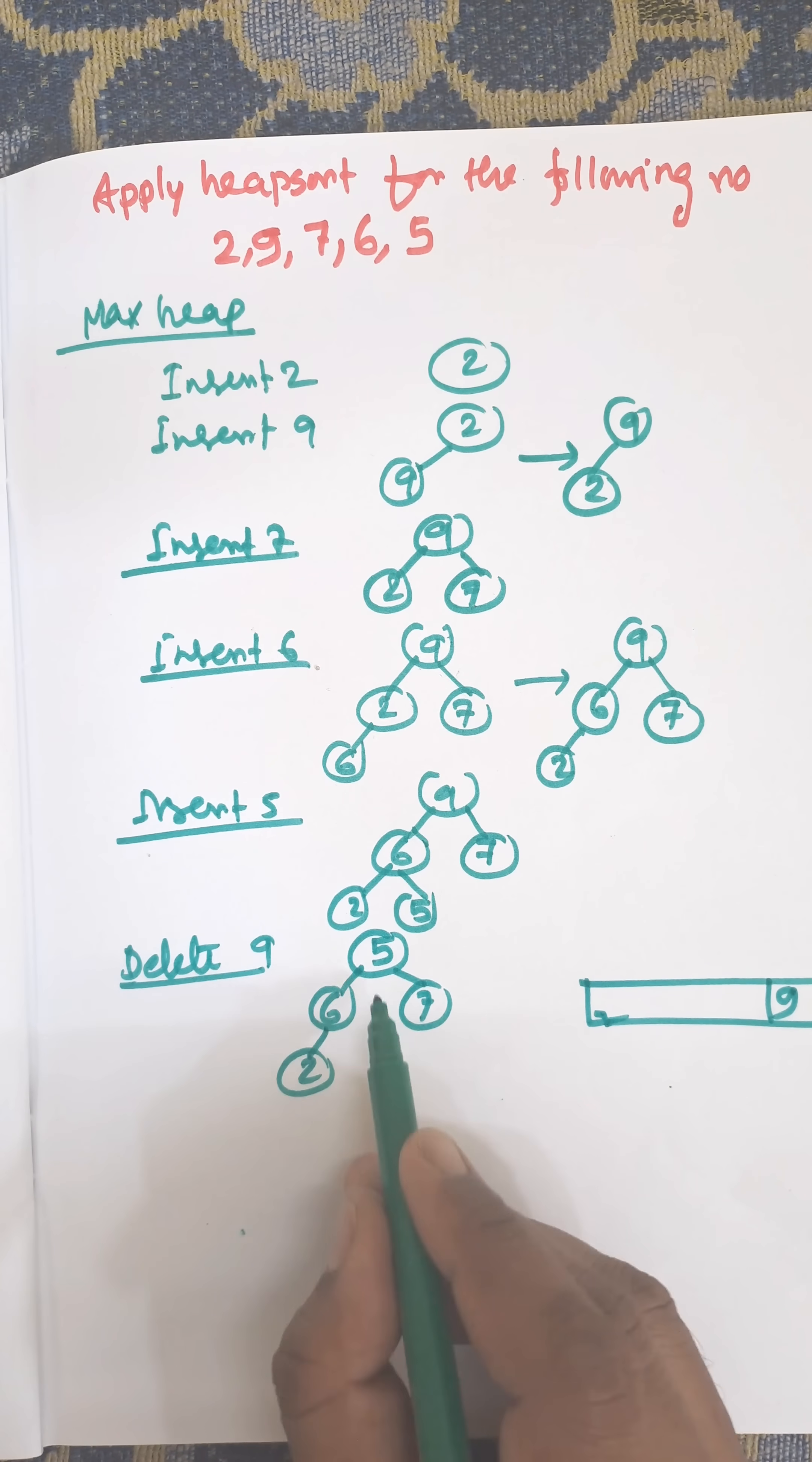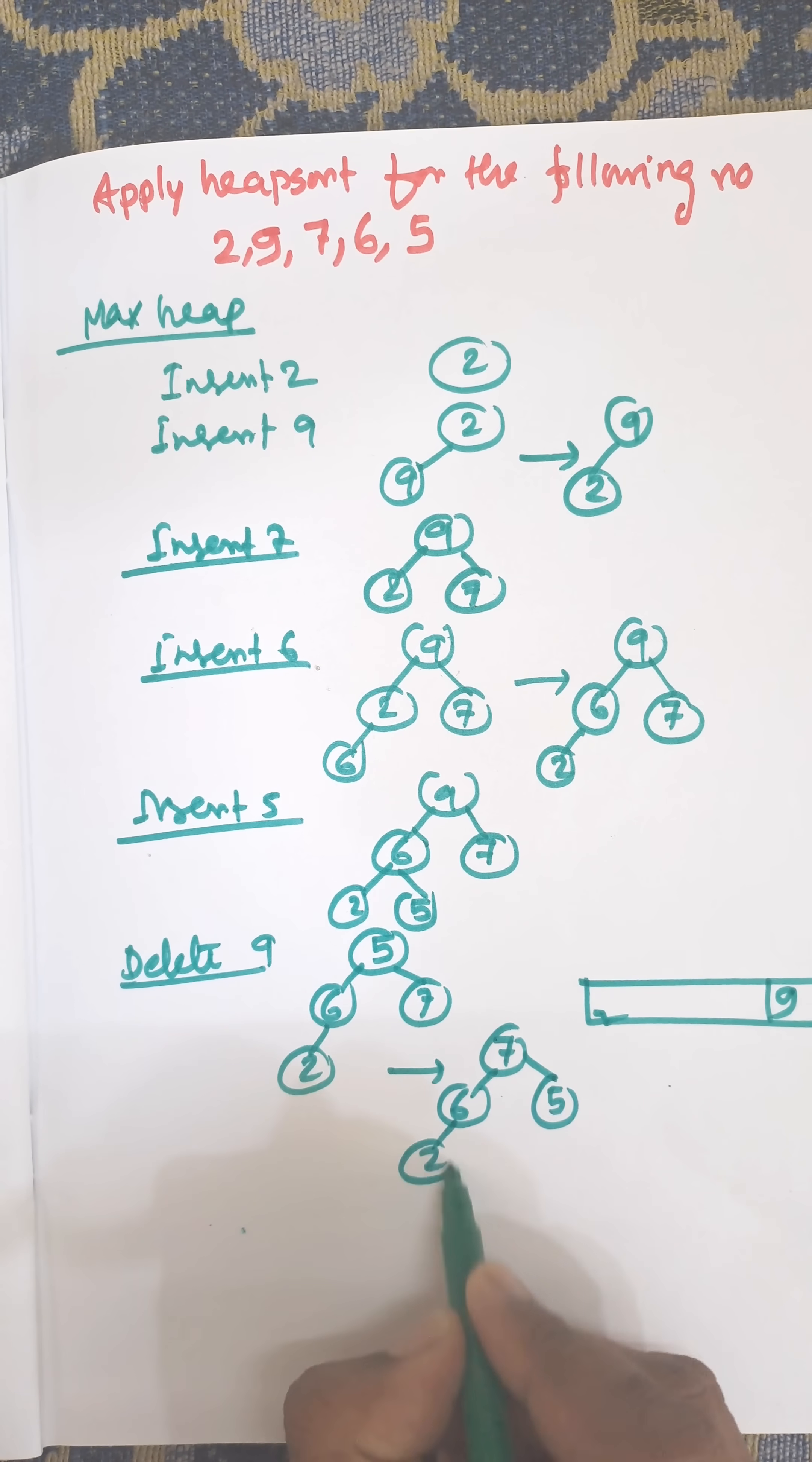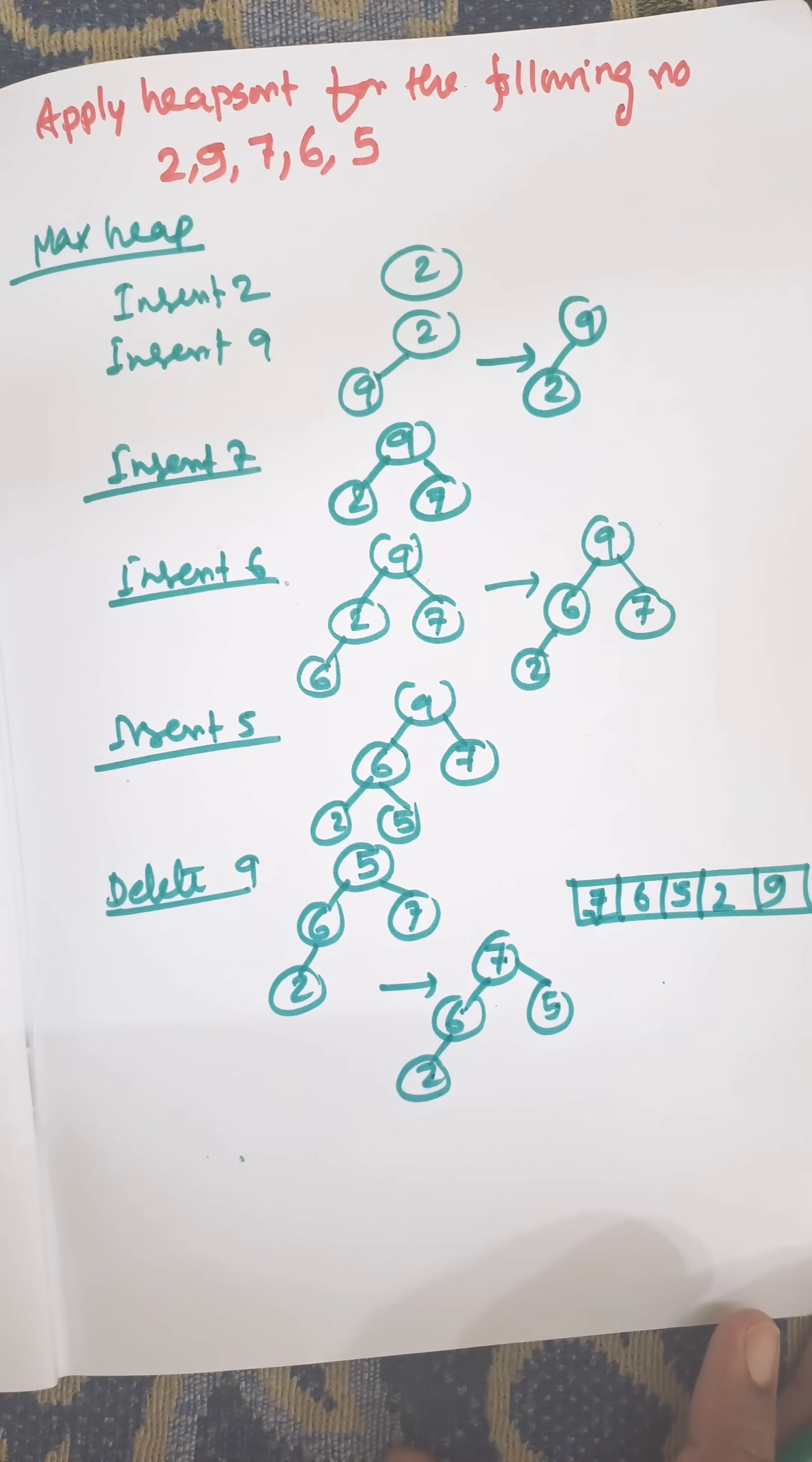Now we need to construct the MaxHeap again. As 7 is greater than 5, 7 will be the root node. 6 and 5 and this is 2. 7, 6, 5, 2. And 9 is stored in the last position.